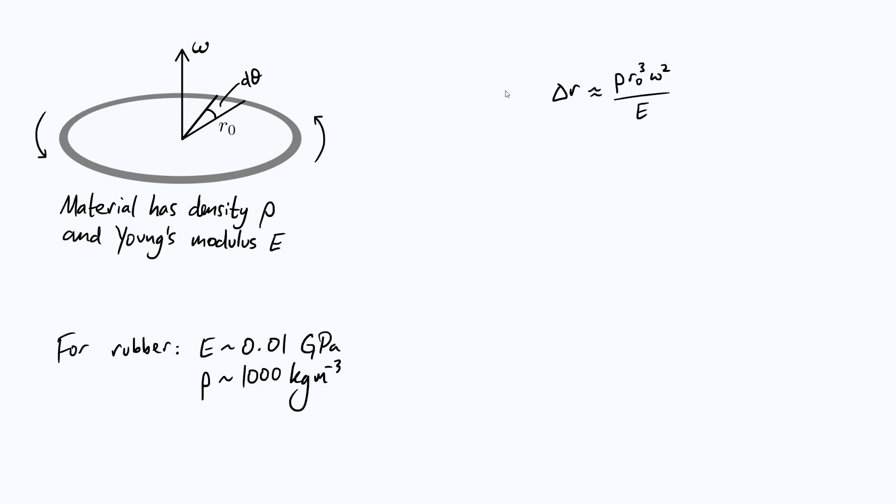Now the expression we derived last time is here, so the change in radius that you get is roughly equal to the density of the material times the cube of the original radius times the square of the angular speed, all divided by the Young's modulus.